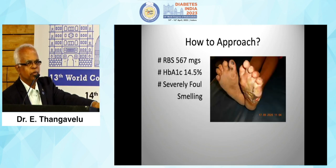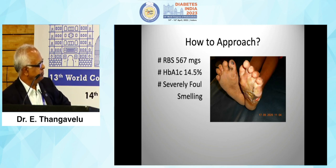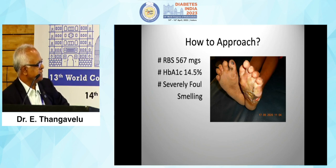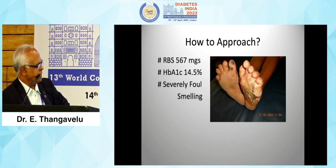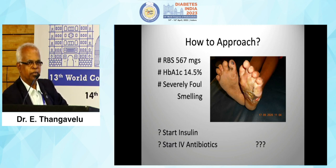Consider a patient coming to our outpatient department: random blood sugar of 567, HbA1c of 14.5%, severely foul-smelling foot. In the right foot, there was altered biomechanics on all the toes with anatomical changes and a small hematoma. All the left toes showed clarto-hematoes, and there was a severe infected foot in the left midfoot with infection extending up to all lateral toes. So, do you start insulin, start IV antibiotics initially, or call the surgeon?